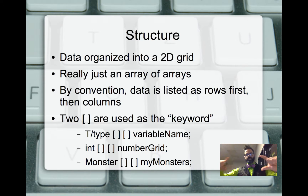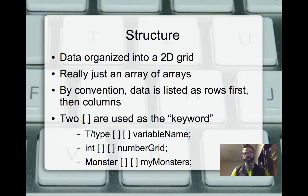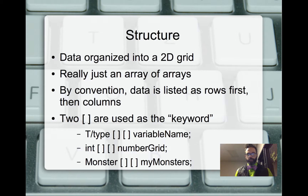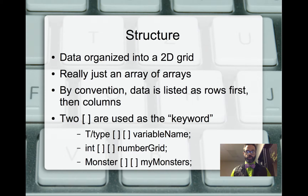Each row in the array itself is another array. By convention in Java, we list the rows first, then the columns, in the first set of square brackets — so we'll have the name of the array, number of rows, number of columns specified right there. Arrays are a little special: there's no actual keyword for them, so the keyword is two sets of square brackets in a row.